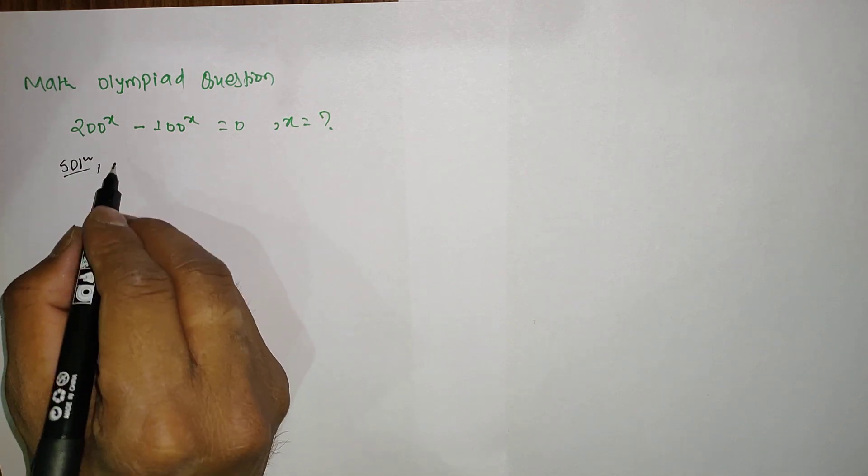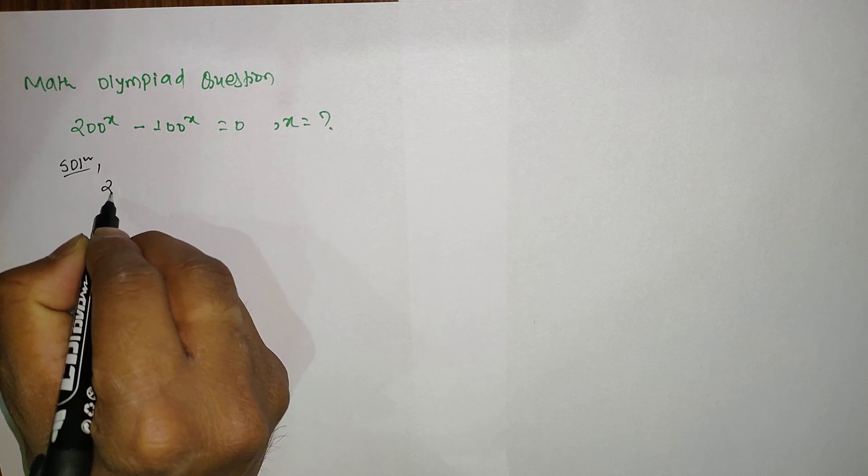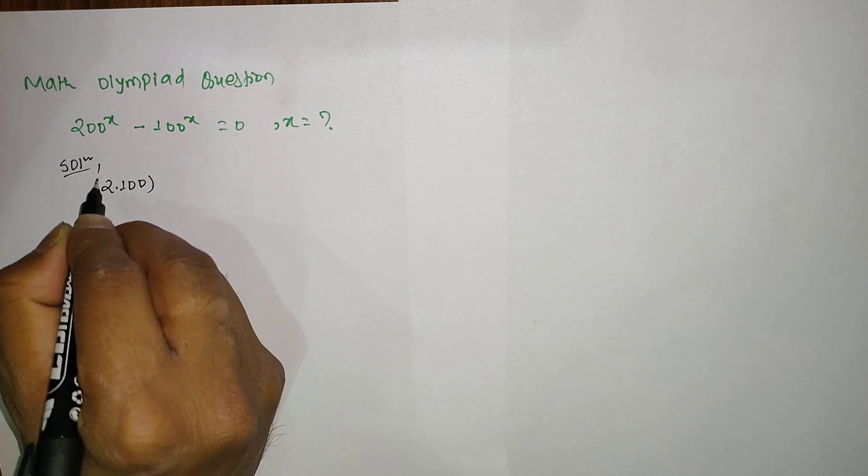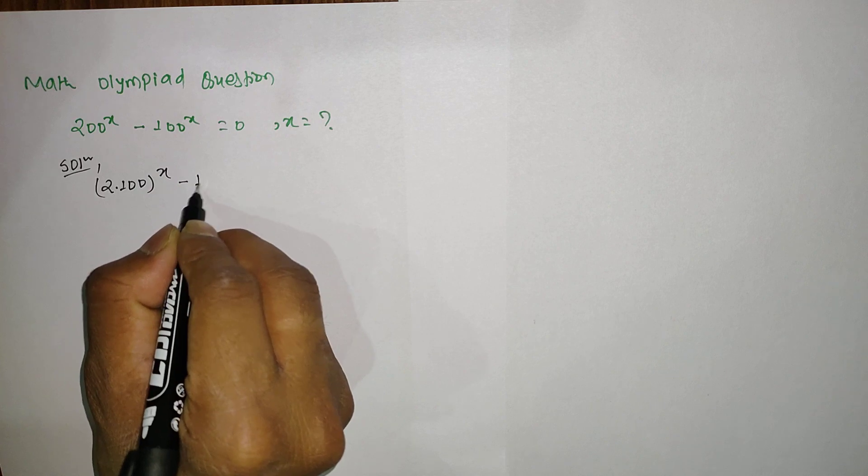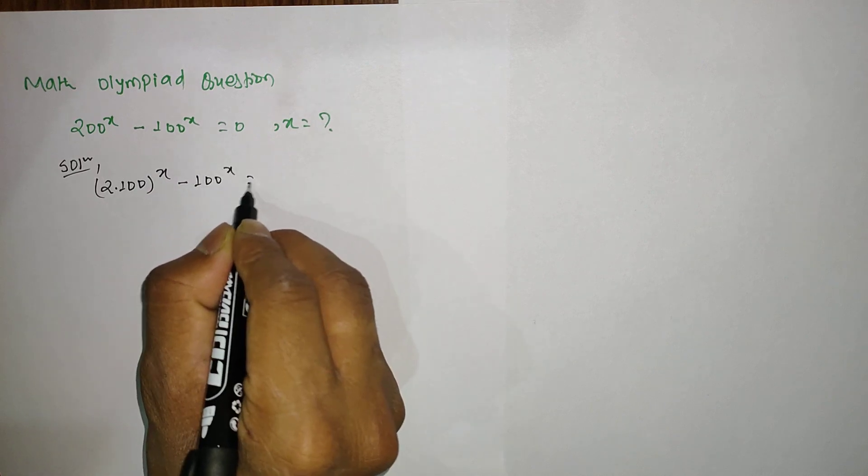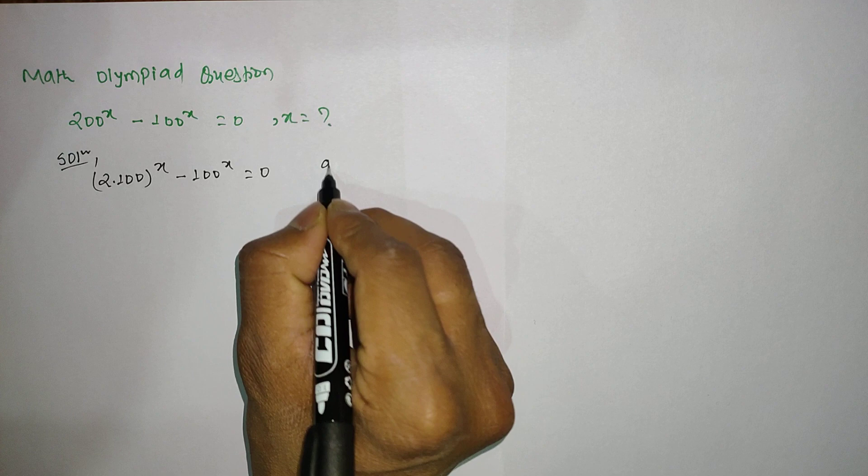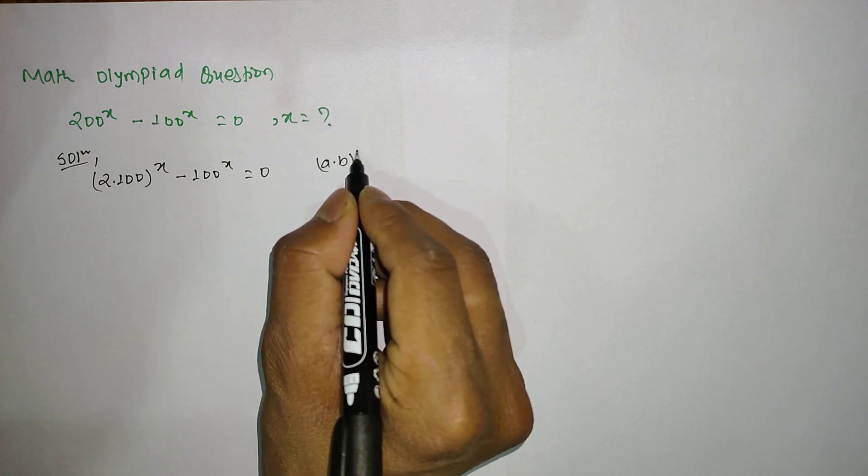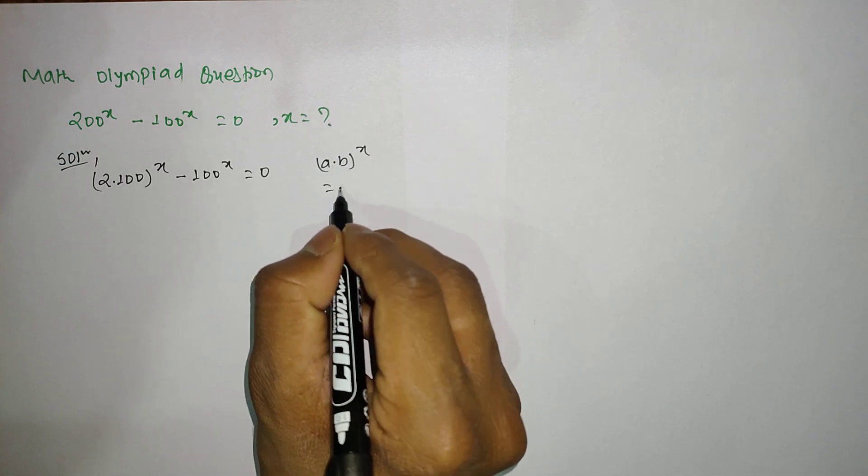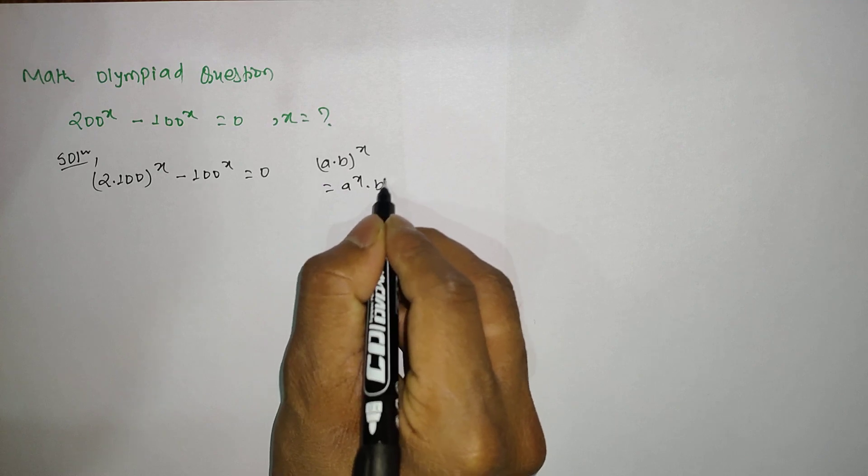Here, 200^x we can write as (2 × 100)^x minus 100^x equals 0. And according to the power rule, (a × b)^x can be written as a^x × b^x.